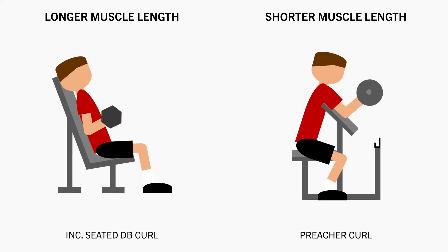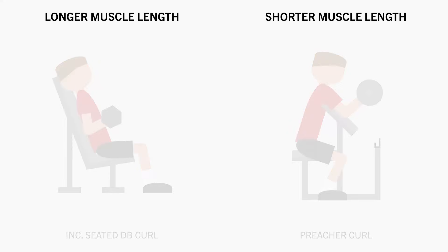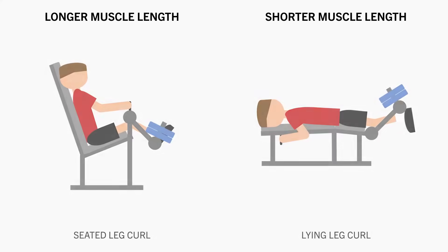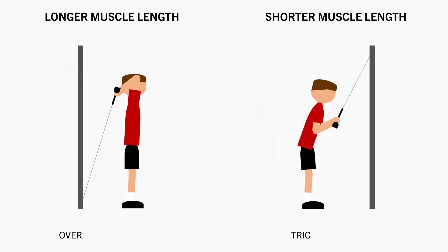This is because the biceps are lengthened to a greater extent due to the position of our shoulder. Other examples include a seated leg curl training the hamstrings at a longer length than lying leg curls, and overhead tricep extensions training the long head of the triceps in a more stretched position than tricep pushdowns.